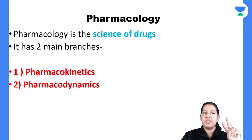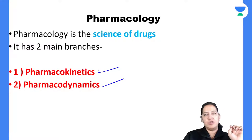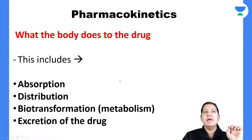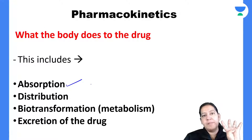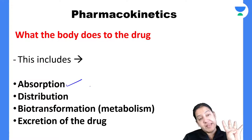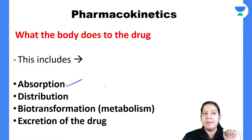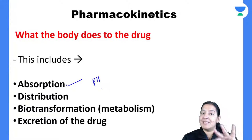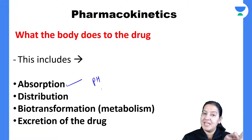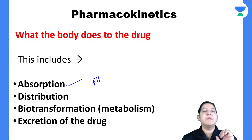Today I will finish pharmacokinetics and tomorrow I will teach you pharmacodynamics. In pharmacokinetics there are four chapters. We have covered absorption in the last lecture — all the factors, definition, mechanism, and the most important was pH dependency. Acidic drugs are absorbed from acidic medium, basic drugs from basic medium, and for excretion the opposite medium is required.